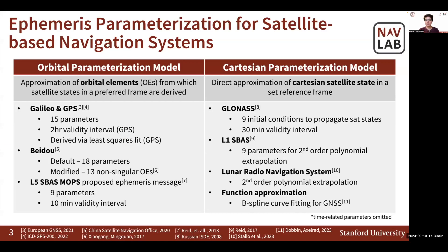There exist two primary methods for parameterizing ephemeris of satellite-based navigation systems. The first one is approximating orbital elements from which satellite states are then derived in a preferred frame of reference. Some core GNSS satellite constellations use this methodology, and over the years researchers have proposed modifications either reducing the number of parameters or time interval for which the approximation is valid. On the other hand, ephemeris can also be broadcasted as the direct approximation of a satellite state in a specific frame of reference. Extrapolation and interpolation of satellite ephemeris are included in this category. Notably, at the past ITM conference, the proposed lunar radio navigation system employed a second-order polynomial extrapolation model for ephemeris parameterization.